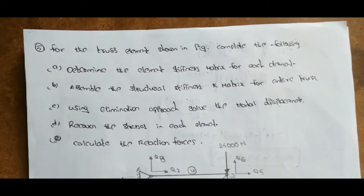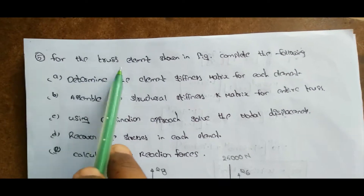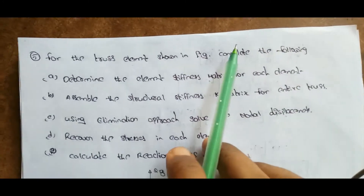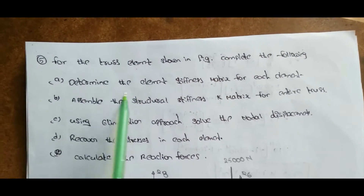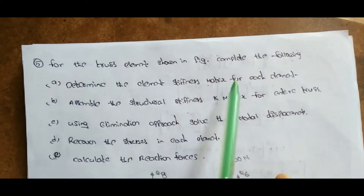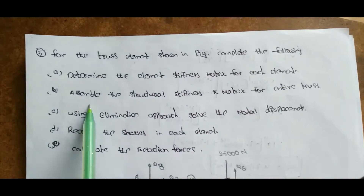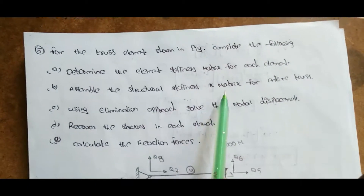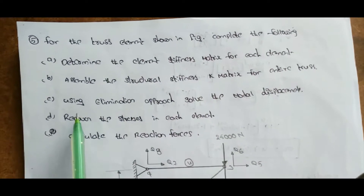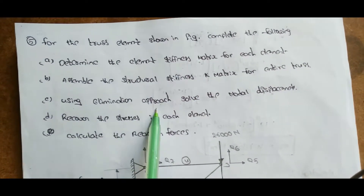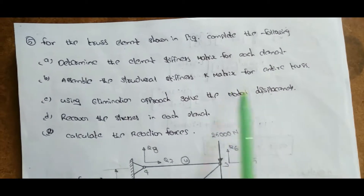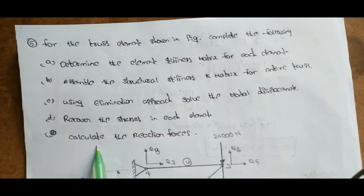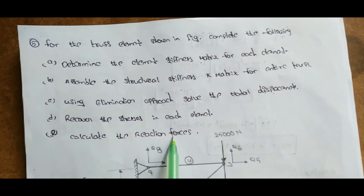The problem is: for the truss element shown in the figure, complete the following. 1. Determine the element stiffness matrix for each element. 2. Assemble the structural stiffness K matrix for the entire truss. 3. Using the elimination approach, solve the nodal displacement. 4. Recover the stresses in each element. 5. Calculate the reaction forces.